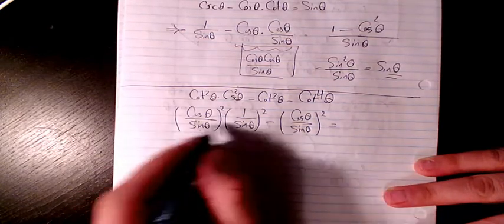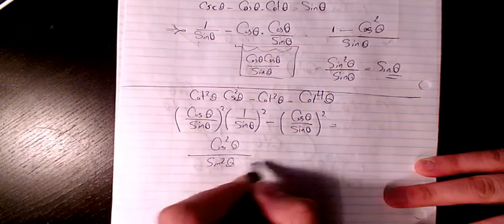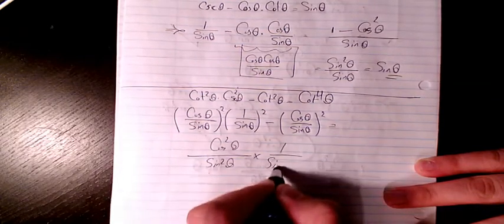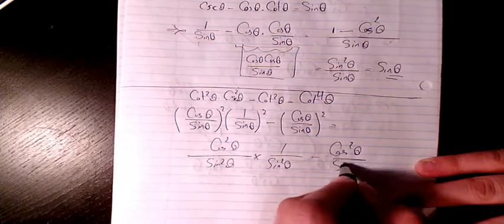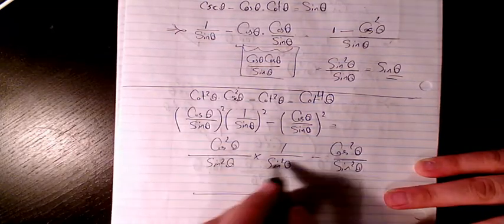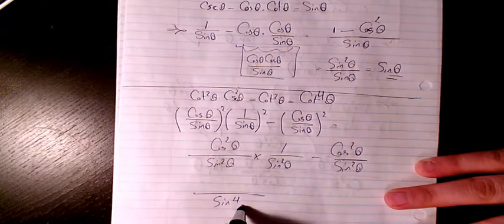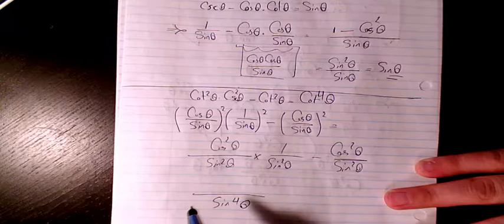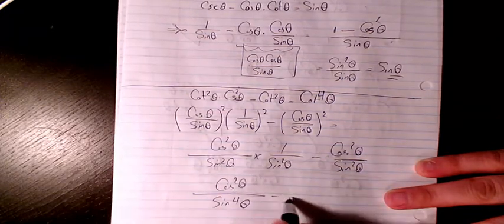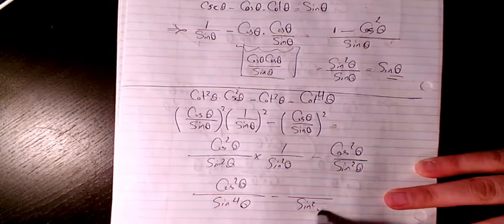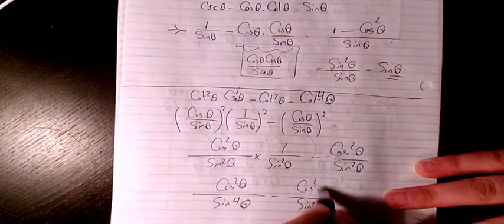So we have cosine²θ over sine²θ times 1 over sine²θ, minus cosine²θ divided by sine²θ. Performing the multiplication, the first term becomes cosine²θ over sine⁴θ, minus cosine²θ over sine²θ.